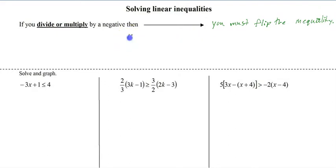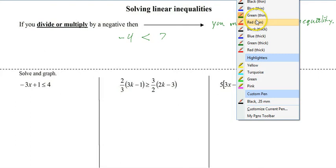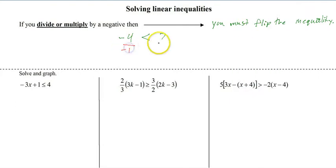Think about it this way. If you have negative 4 and 7, negative 4 is less than 7. So if we divide by negative 1 to each side, then what we would get is 4 and negative 7. Now which one's bigger? The 4. And so the inequality now flipped.